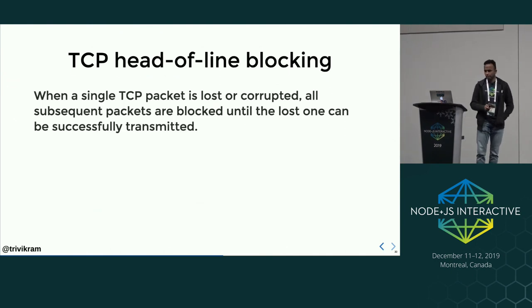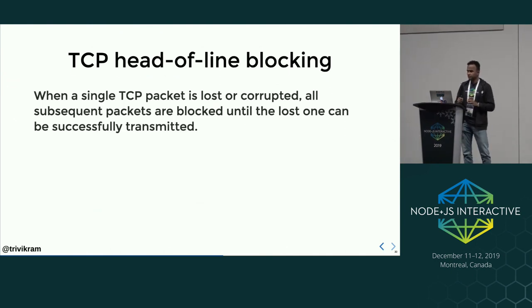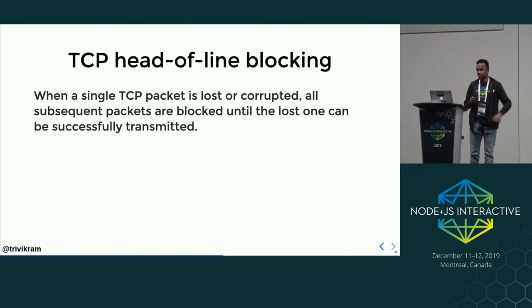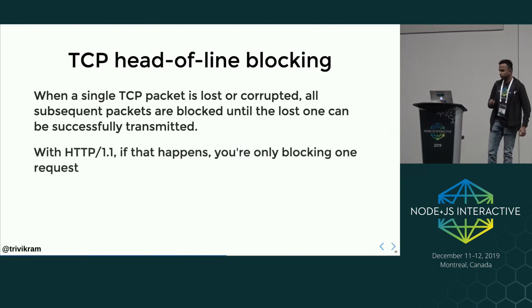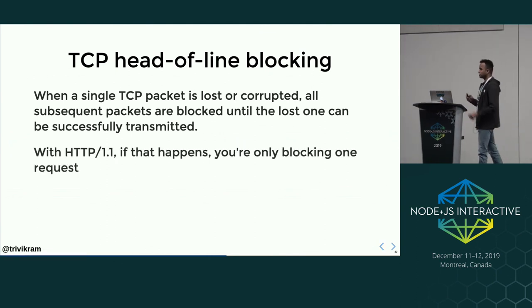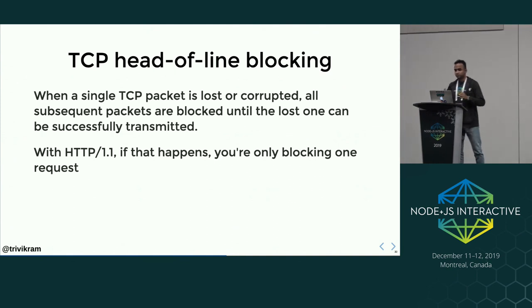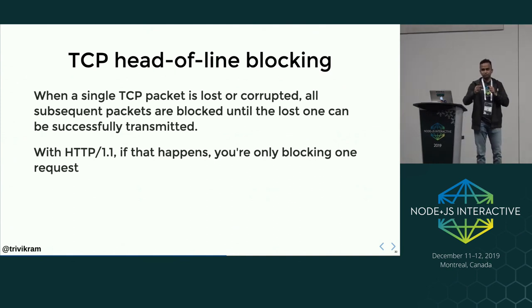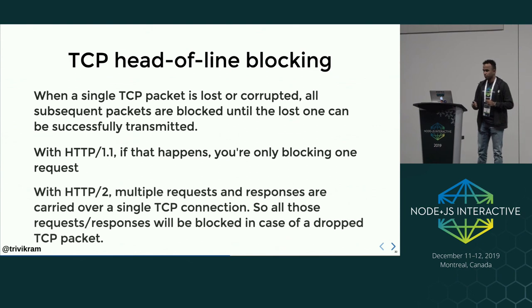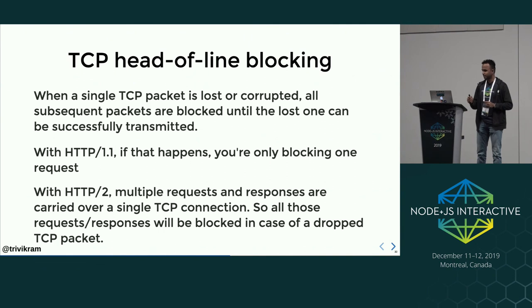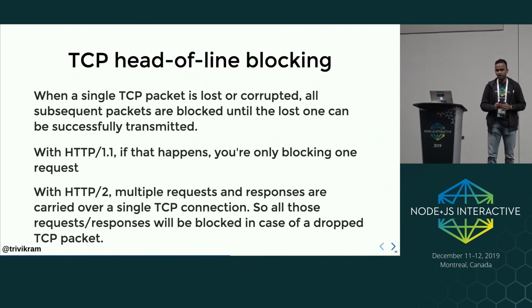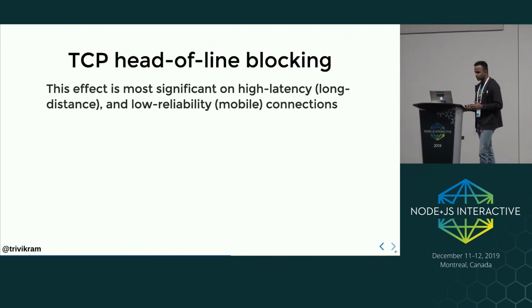What is TCP head-of-line blocking? When a single TCP packet is lost or corrupted, all subsequent packets are blocked until that packet can be successfully retransmitted. In HTTP/1.1, if this happens you are blocking only one request, because there is only one HTTP request per TCP connection. But in HTTP/2, since multiple requests and responses are carried over a single TCP connection, all of those request-responses will be blocked.